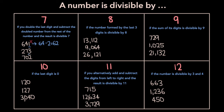Now let's repeat the process for 273. We take the last digit, which is 3, and we double it — that's 6. Then we subtract 6 from the rest of the number, which is 27. So 27 minus 6 gives us 21. Now 21 is divisible by 7 — 21 divided by 7 is 3 — and so 273 is divisible by 7. For 702, the last digit is 2, so we double it and we get 4. The rest of the number is 70. 70 minus 4 equals 66. 66 is not divisible by 7, and so 702 isn't either.